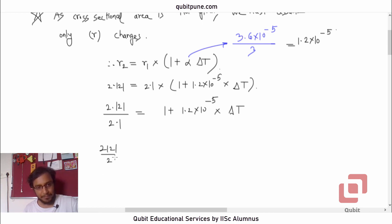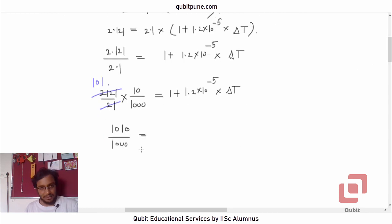Let's do it. 2.121 by 2.1 into 10 by 1,000. We shifted this to right by 3, so we have to divide by 1,000. We shifted this decimal point to right by 1, so we must multiply it by 10. Now, how much is 2121 upon 21? Is it not 101 equal to 1 plus 1.2 into 10 raised to negative 5 into delta t? That will be 1.01. So this is 1 plus 1.2 into 10 raised to negative 5 delta t.